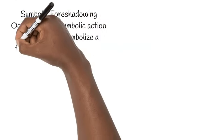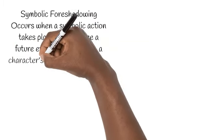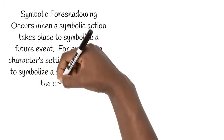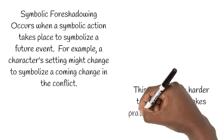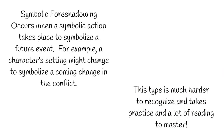Symbolic foreshadowing occurs when a symbolic action takes place to symbolize a future event. For example, a character's setting might change to symbolize a coming change in the conflict. This type is much harder to recognize and takes practice and a lot of reading to master.